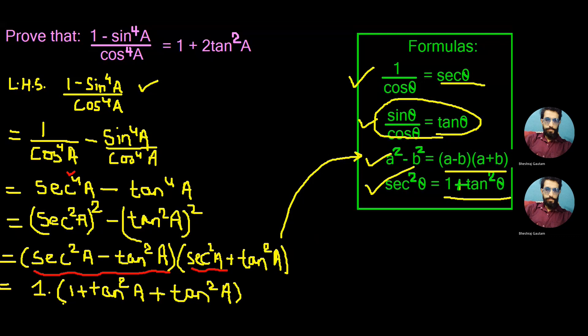The product of the components inside the bracket will be 1 plus tan square A and tan square A equals 2 tan square A, which is the same as RHS of the given question. Thus we prove left hand side equals right hand side.